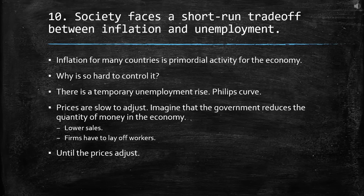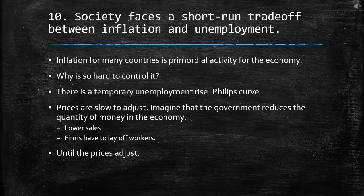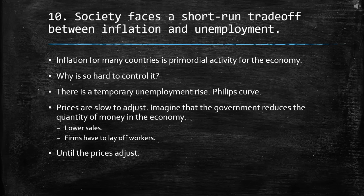The tenth and last principle is that society faces a short-run trade-off between inflation and employment. Inflation is a primordial concern for many countries' economies. But why is it so hard to control? Because there is a relation — there is a temporary unemployment rise — which is called the Phillips Curve. What does it say? Basically, prices are slow to adjust. Imagine that the government reduces the quantity of money in the economy. People on average then have less money than before. In these cases they won't buy as much, so firms will have lower sales. Once sales are lower, the firms have to lay off workers. This continues until prices adjust, which happens in the medium run or the long run.